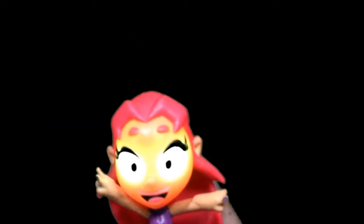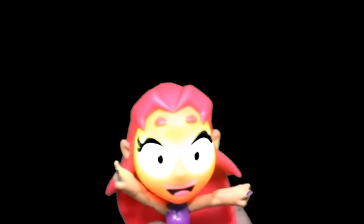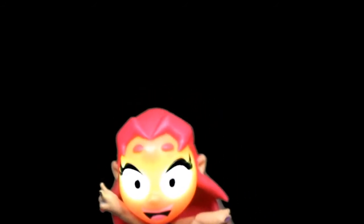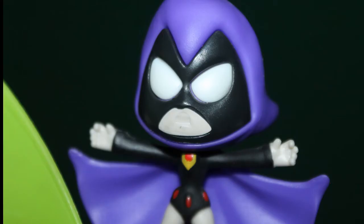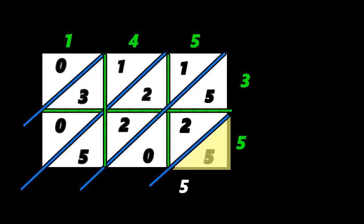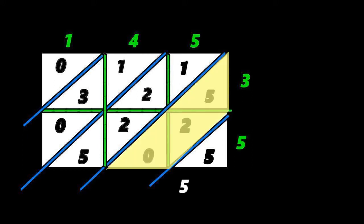Now, to solve the final answer or the final product, we will use the operation addition. We will add the numbers inside the diagonal line. Since five here doesn't have any number to be added, we are going to bring it down. So, we bring down five. Next, look for the numbers inside the diagonal line. What are they? We have five, two, and zero. Let us add them together. Five plus two — seven, plus zero — seven.